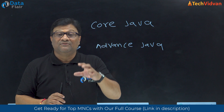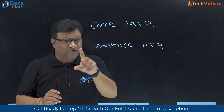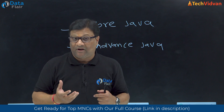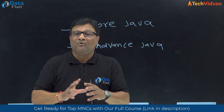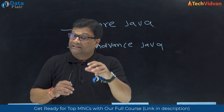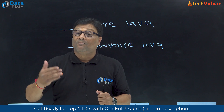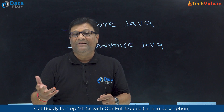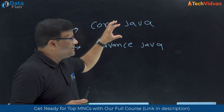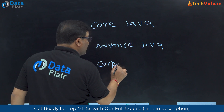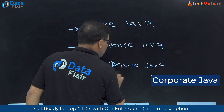Companies focus on Core Java because they want to mold a developer according to their own requirements. If a company wants you as a mobile application developer, they look for strong Core Java skills and then train you in about 15 days to develop mobile apps. So the first stage is Core Java, the second is Advanced Java, and the third is Corporate Java — which involves frameworks.